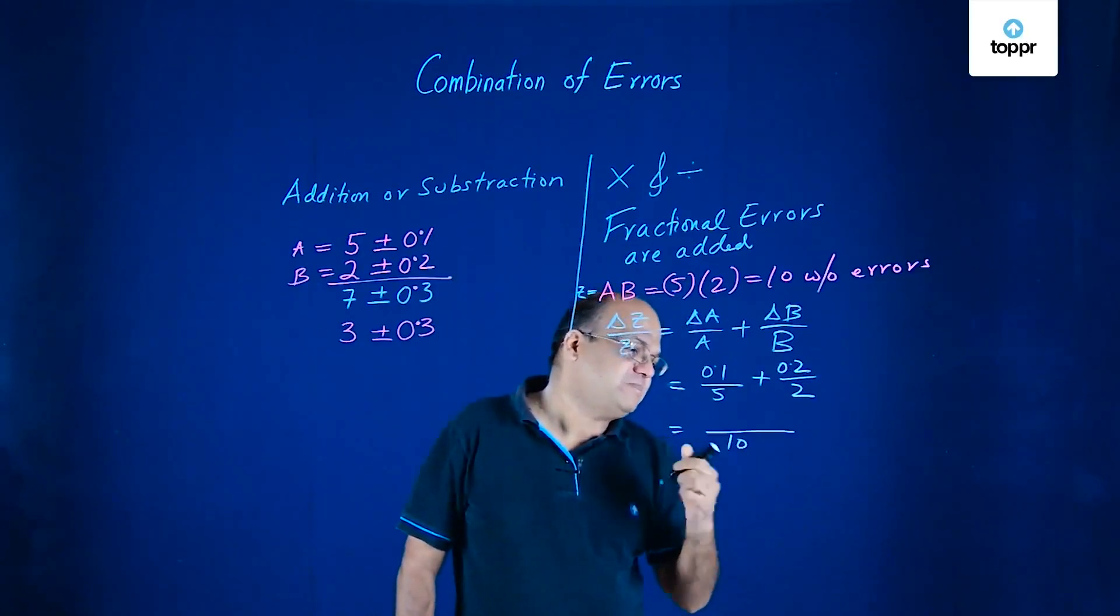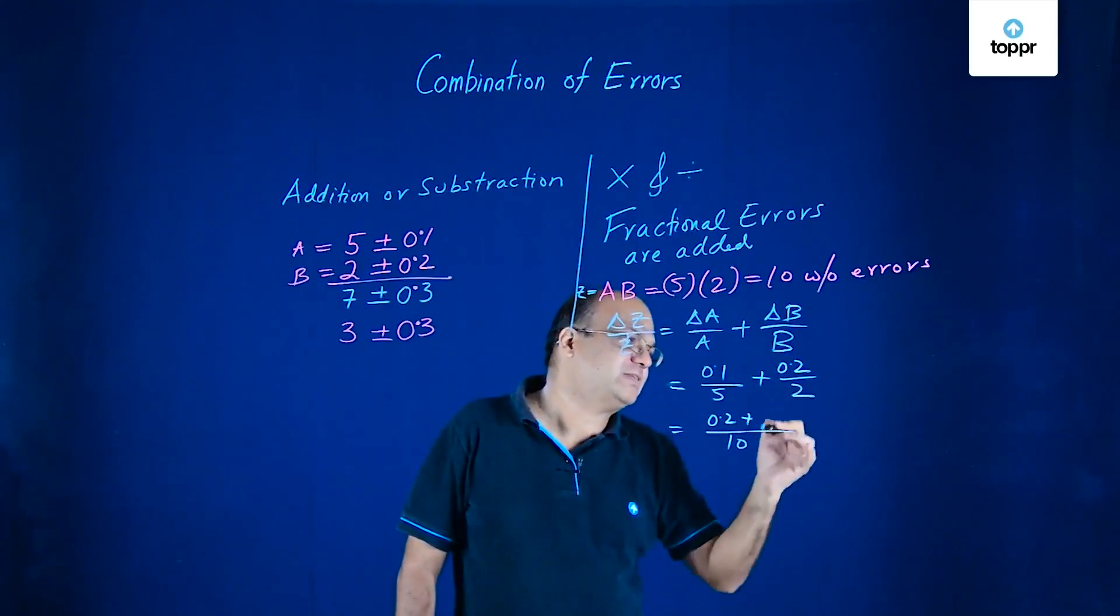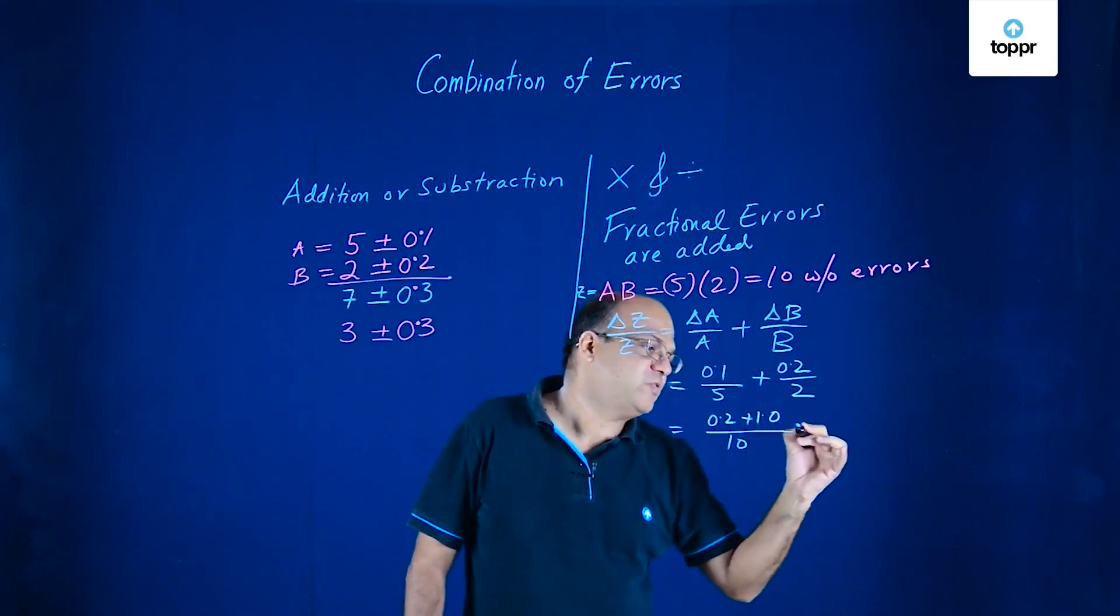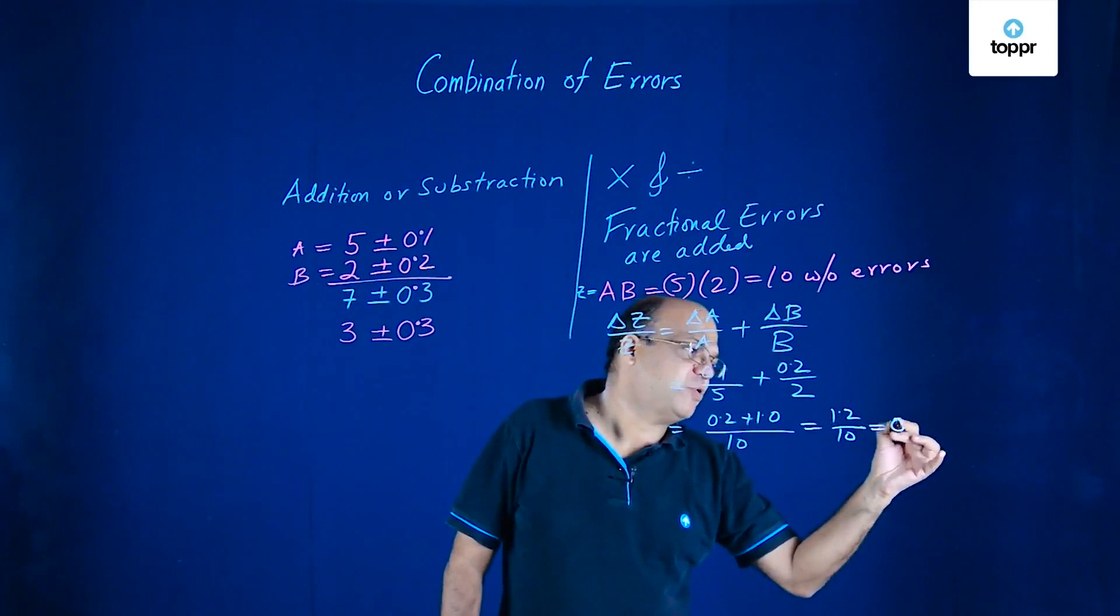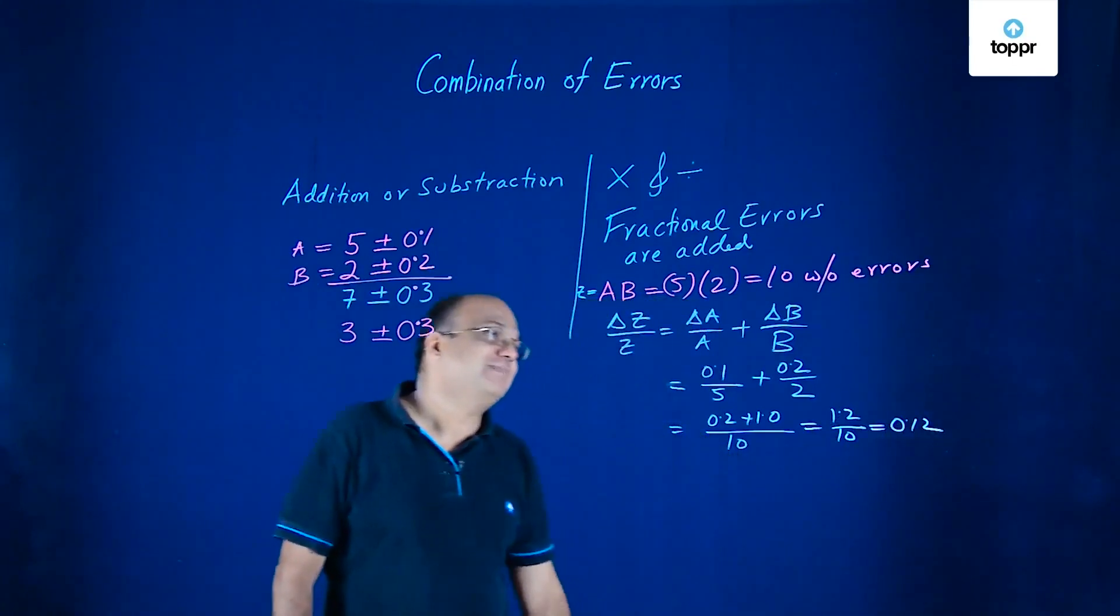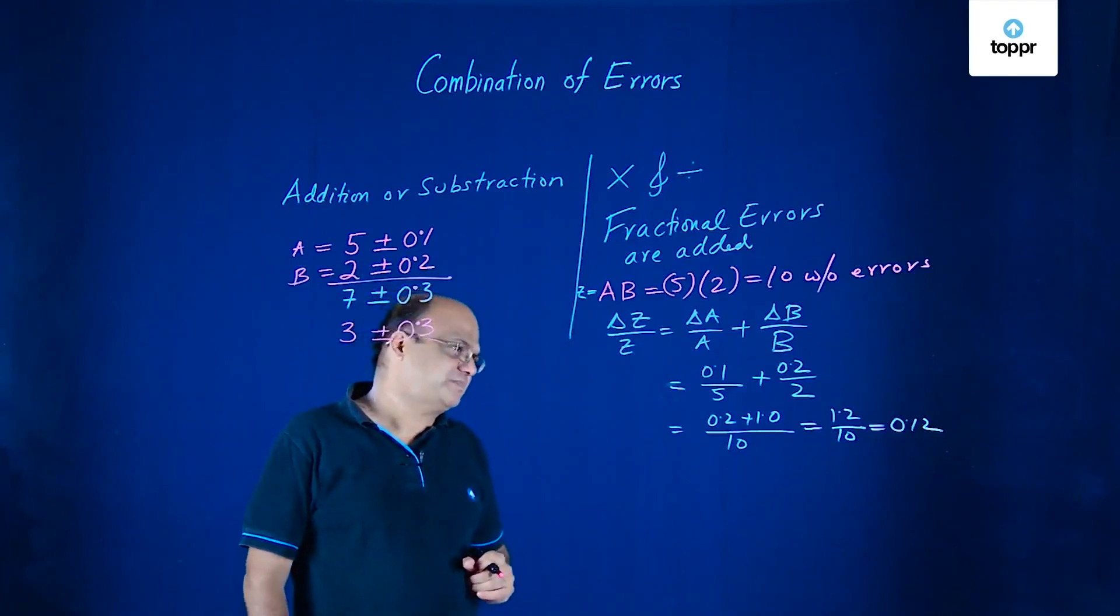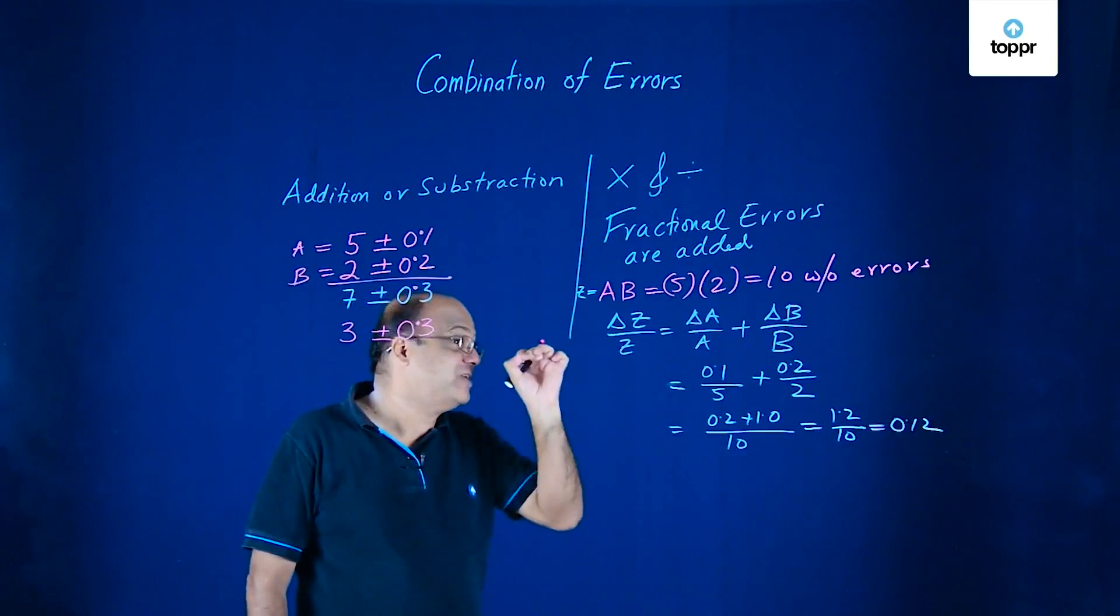Now you can simplify this. This will give you 10. You will get 0.2 here plus you will get 5 into 0.2 that is 1. So 1.2 by 10 that's 0.12. Is that correct? Yes.